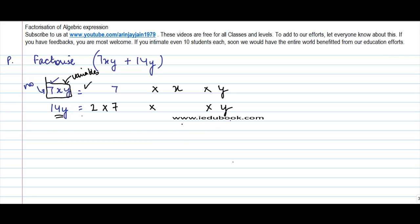And then what I do is I try to find out what are the common numbers here. So from here I see that 7 is common and y is common. So I pick up these two common numbers and I write them as 7 into y. So these are the common numbers and I put a bracket to it.